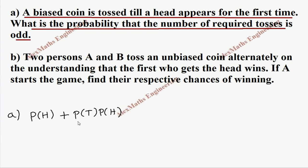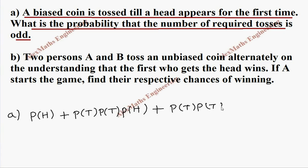When we take the second toss case, we have only two tosses — this is not odd. So if I want an odd number, on the second toss I also have to get tail, and then on the third toss I have to get head. That gives an odd number of tosses. In the same way, the first case is one toss, then three tosses, then five tosses must come — so the pattern is: P(T), P(T), P(T), P(T), then one head.